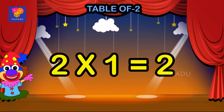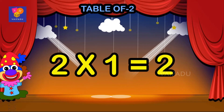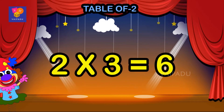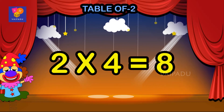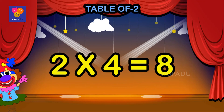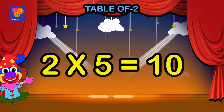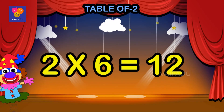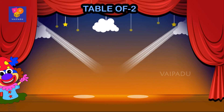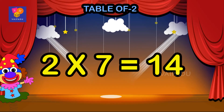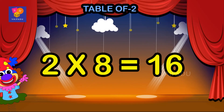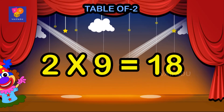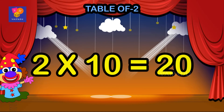Two ones are two, two twos are four, two threes are six, two fours are eight, two fives are ten, two sixes are twelve, two sevens are fourteen, two eights are sixteen, two nines are eighteen, two tens are twenty.